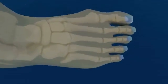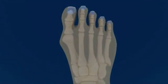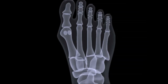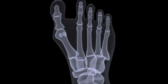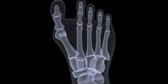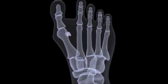A radiograph analysis of a bunion deformity in the anterior-posterior or dorsal plantar view will reveal a variety of pathological components. Most notably so is the exaggerated inter-metatarsal angle between the first and second metatarsal. This may be accompanied by a displacement of the first metatarsal from its position over the sesamoids, such that the metatarsal demonstrates a medial alignment away from the sesamoids which lie to the lateral side.